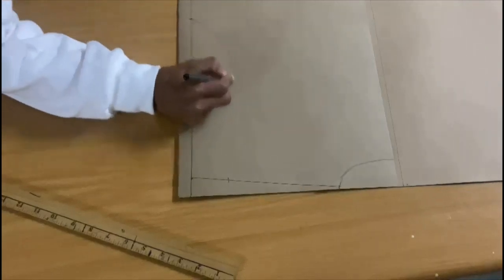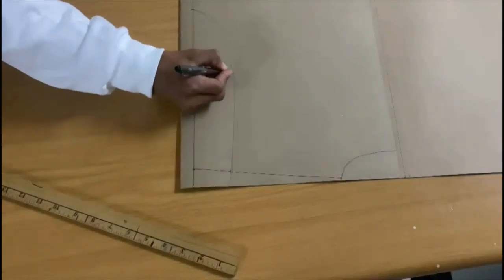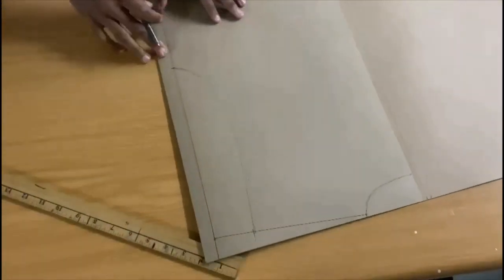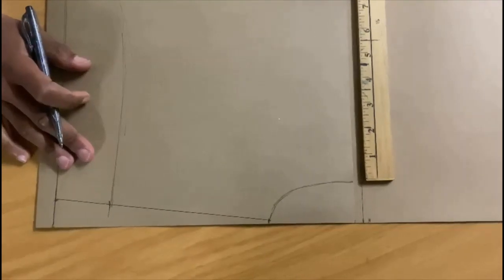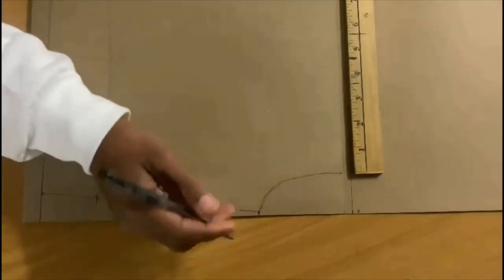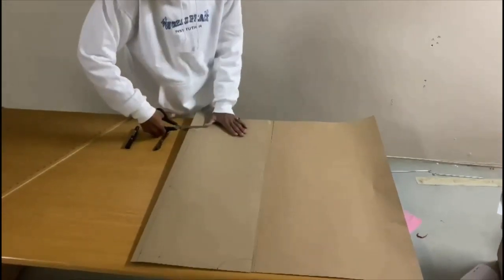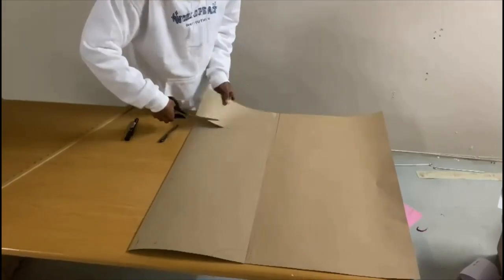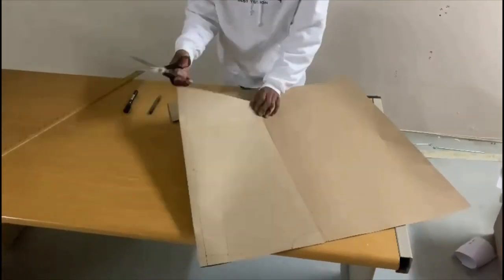The next thing you're going to do is just connect these lines with a curve. That's going to be your arm hole. Just connect these just like this, making sure that you're trying to keep it like this. The next step that you're going to do is actually cut these out. We'll be right back.